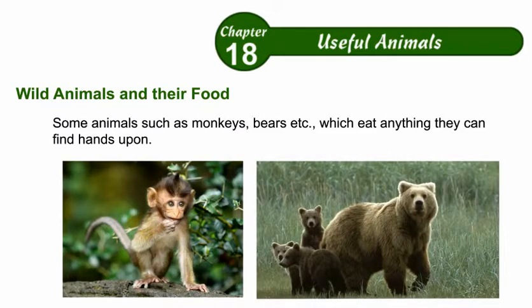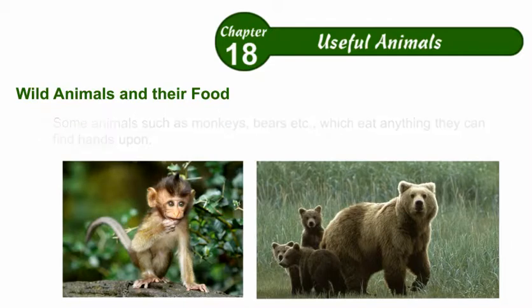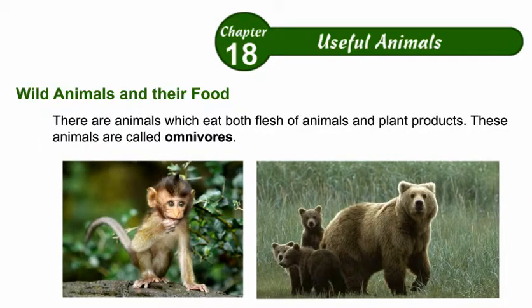Some animals, such as monkeys and bears, eat anything they can find. These animals eat both flesh and plant products, and are called omnivores.